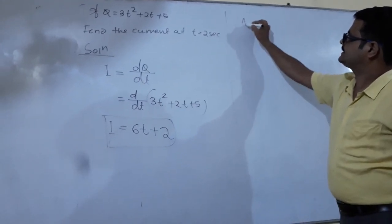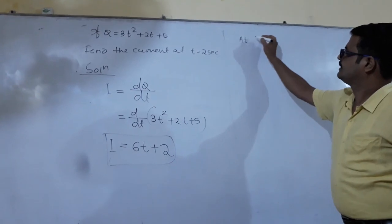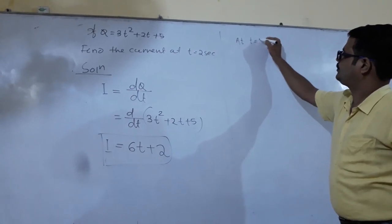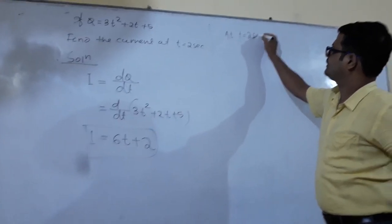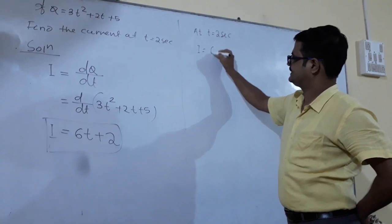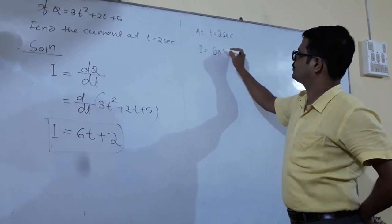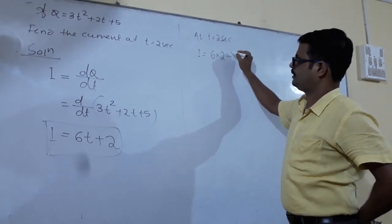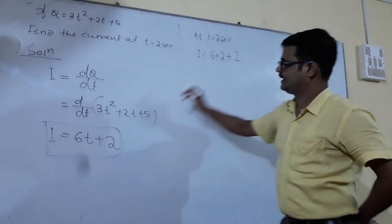Now say t equals 2 seconds. Substituting into the expression, i equals 6 into 2 plus 2.